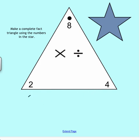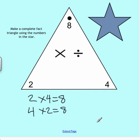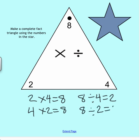We're going to do 2 times 4 equals 8. Then we'll turn it around: 4 times 2 equals 8. With division, do you remember which number we start with? The largest number. So 8 divided by 4 equals 2, and 8 divided by 2 equals 4.